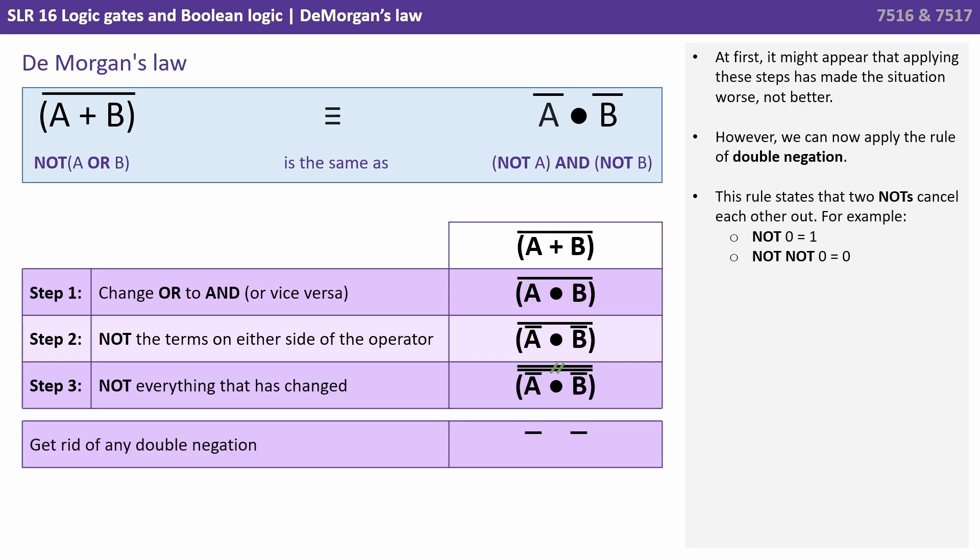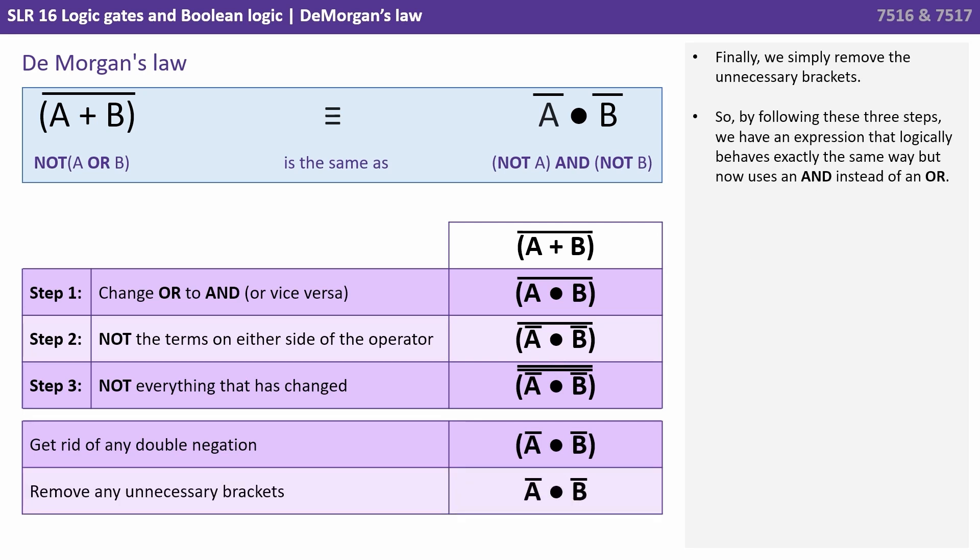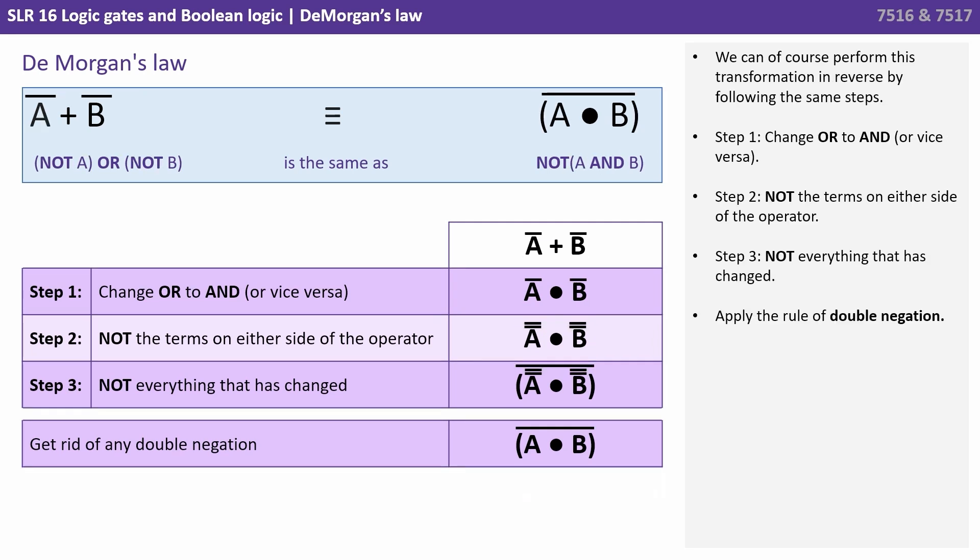At first, it might appear that applying these steps has made the situation worse, not better. However, we can now apply double negation. This rule states that two NOTs cancel each other out. For example, NOT zero equals one, NOT NOT zero equals zero. Finally, we simply remove the unnecessary brackets. So by following these three steps, we have an expression that logically behaves exactly the same way, but now we're using AND gates instead of OR. We can, of course, perform this transformation in reverse by following the same steps. Change OR to AND, NOT the terms on either side of the operator, NOT everything that's changed, and apply the rule of double negation.